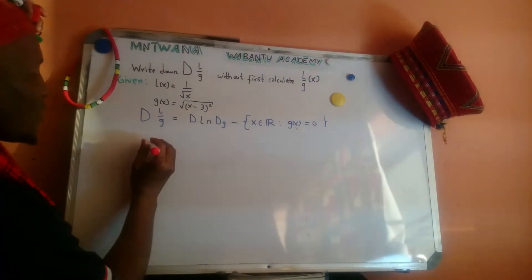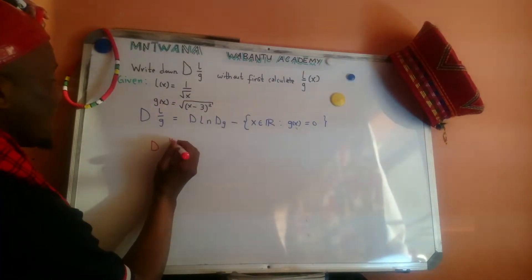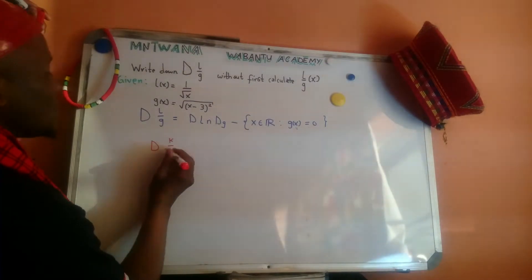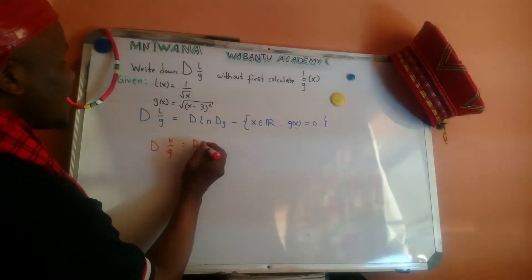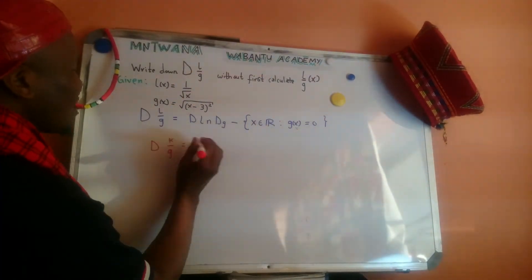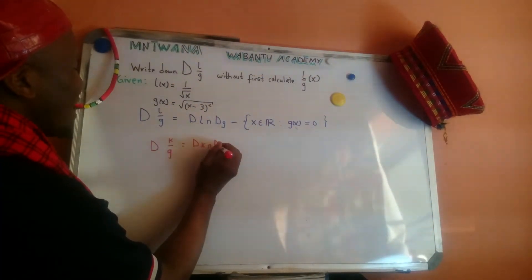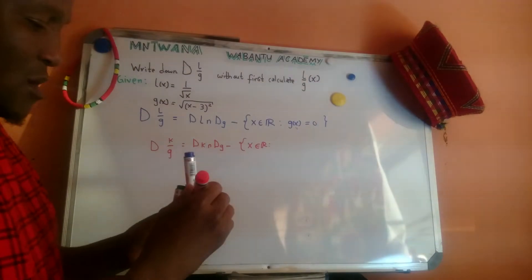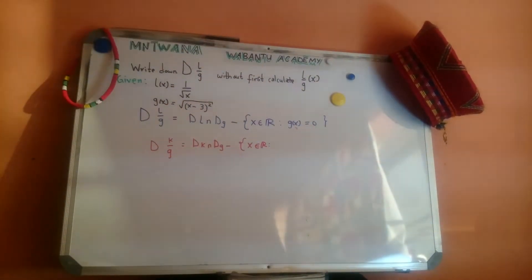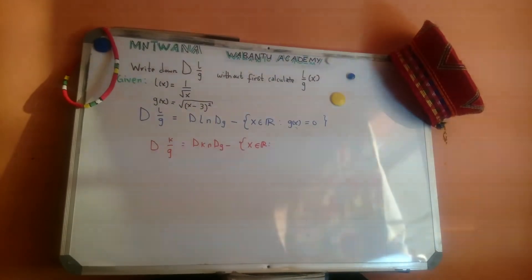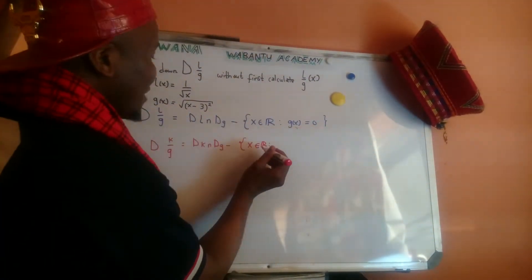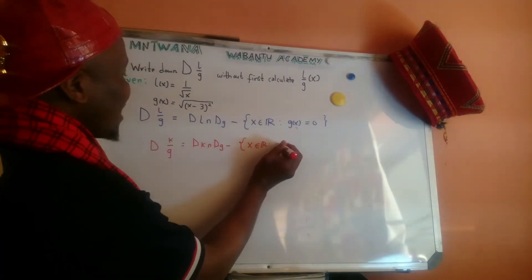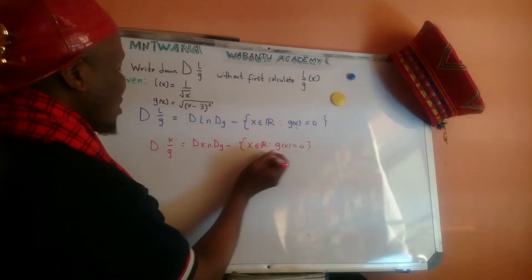For example, if somebody gives you the domain of k over g, you say: domain of k — the numerator function — intersected with domain of g — the denominator function — then minus x in the real numbers where g(x) equals zero.